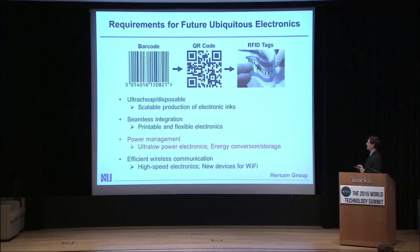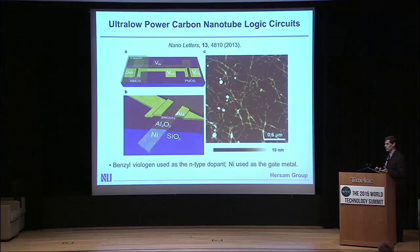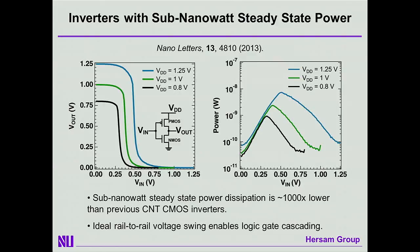But we need more than that. In addition, we need schemes for controlling power management. There's no way we can have these barcodes on each and every object plugged into the wall — we need very efficient means of running those devices and harvesting energy from the environment. Towards that end, we take our carbon nanotubes and print them into logic circuits, which allow us to do digital processing of information at very low power consumption. Our peak power consumption at an operating voltage of 0.8 volts is about 1 nanowatt. To put that in context, a modern laptop dissipates 100 watts for a billion transistors, or 100 nanowatts per transistor — this is two orders of magnitude lower power consumption.